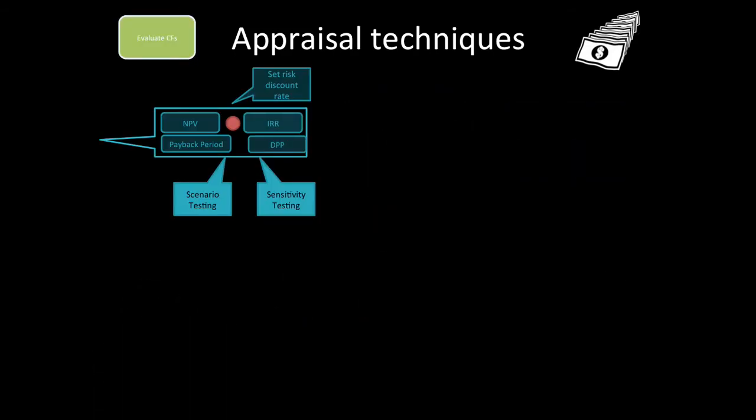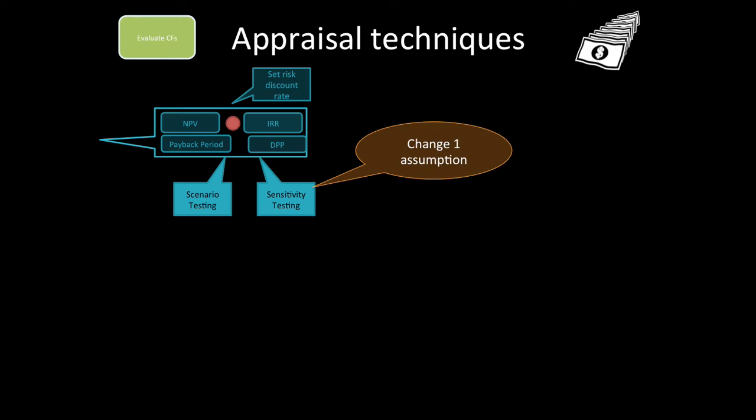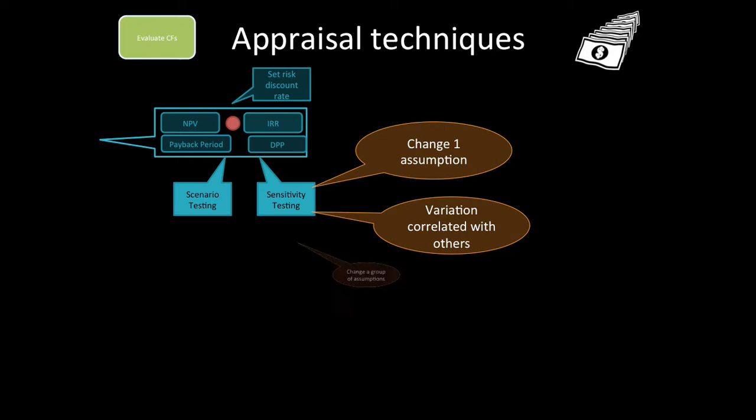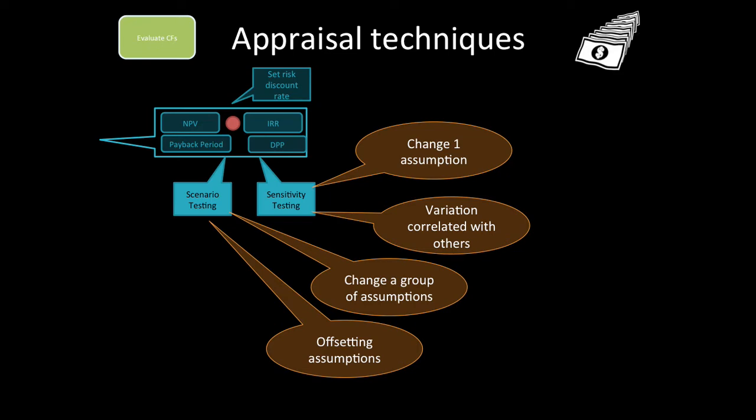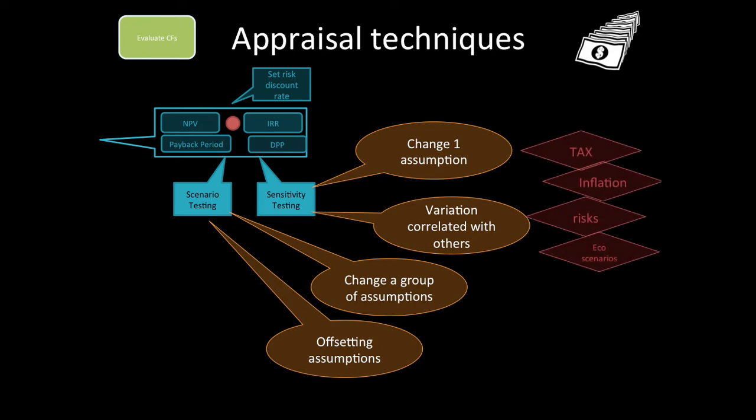Scenario testing and sensitivity testing. Sensitivities: you change one assumption and look at the variation and correlation with others. Scenario testing is when we change a group of assumptions and there might be some offsetting assumptions. We could complicate the model by introducing tax, inflation, risks, and economic scenarios.